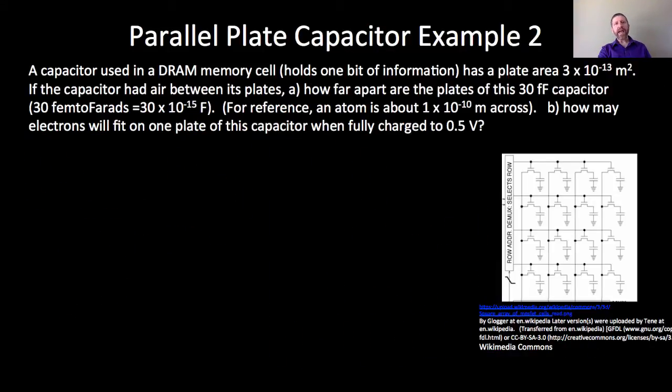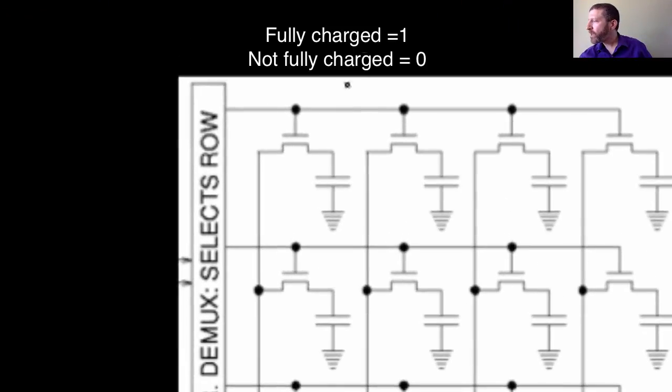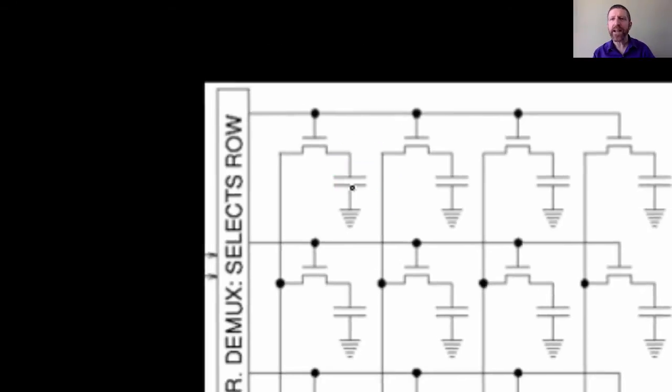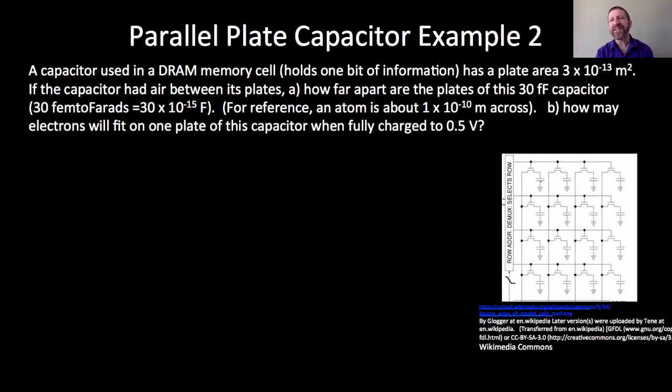Here's another example here. A capacitor used in a DRAM memory cell, it's a dynamic random access memory, which you have in every one of your computers. That's the type of memory that, when you power off, all the memory is lost. A DRAM cell holds one bit of information. And if you're looking right here on this diagram here that came from the Wikimedia Commons, we're looking at one of these capacitors right there, just one of those. That is what we're looking at as a DRAM cell. It holds either a 1 or a 0. But that little tiny capacitor right there has plate area about 3 times 10 to the negative 13 square meters. Very, very, very tiny.